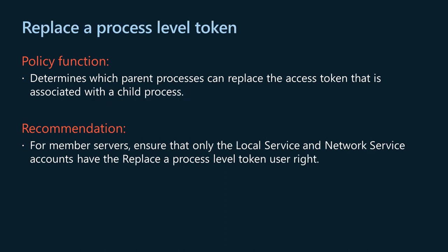The replace a process level token policy setting determines which parent processes can replace the access token associated with a child process. Specifically, it determines which user accounts can call the CreateProcessAsUser API so that one service can start another. An example of a process that uses this user right is Task Scheduler. An access token is an object that describes the security context of a process or thread, including the identity and privileges of the associated user account. With this user right, every child process that runs on behalf of this user account would have its access token replaced with the process level token. For member servers, ensure that only the local service and network service accounts have the replace a process level token user right.